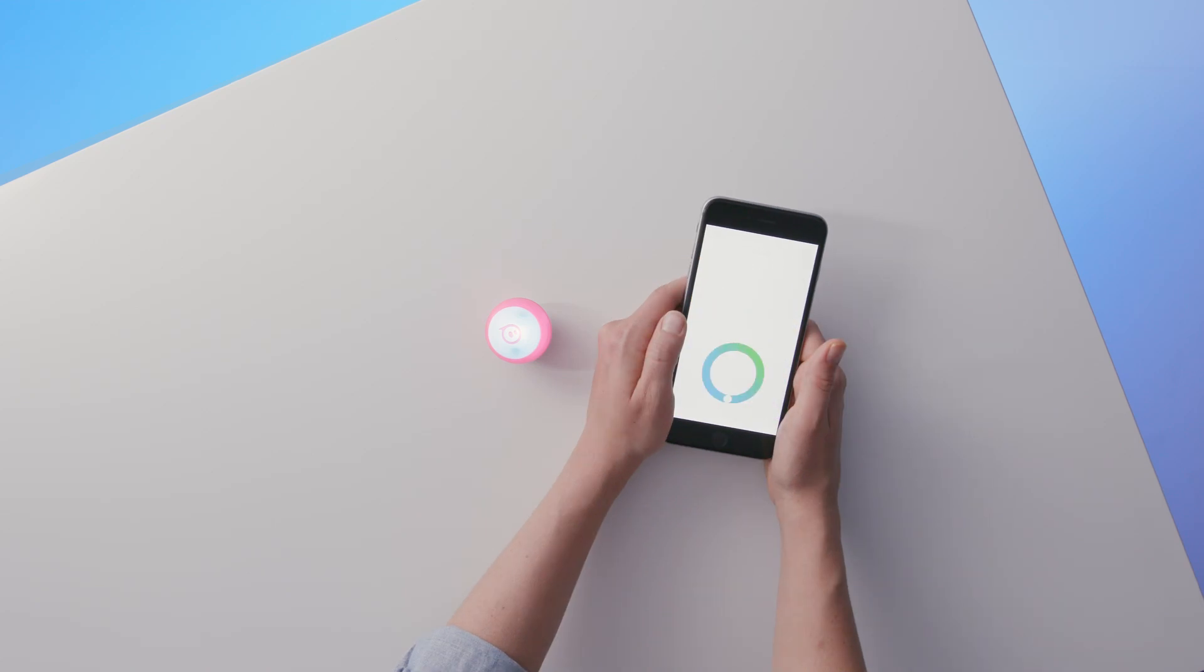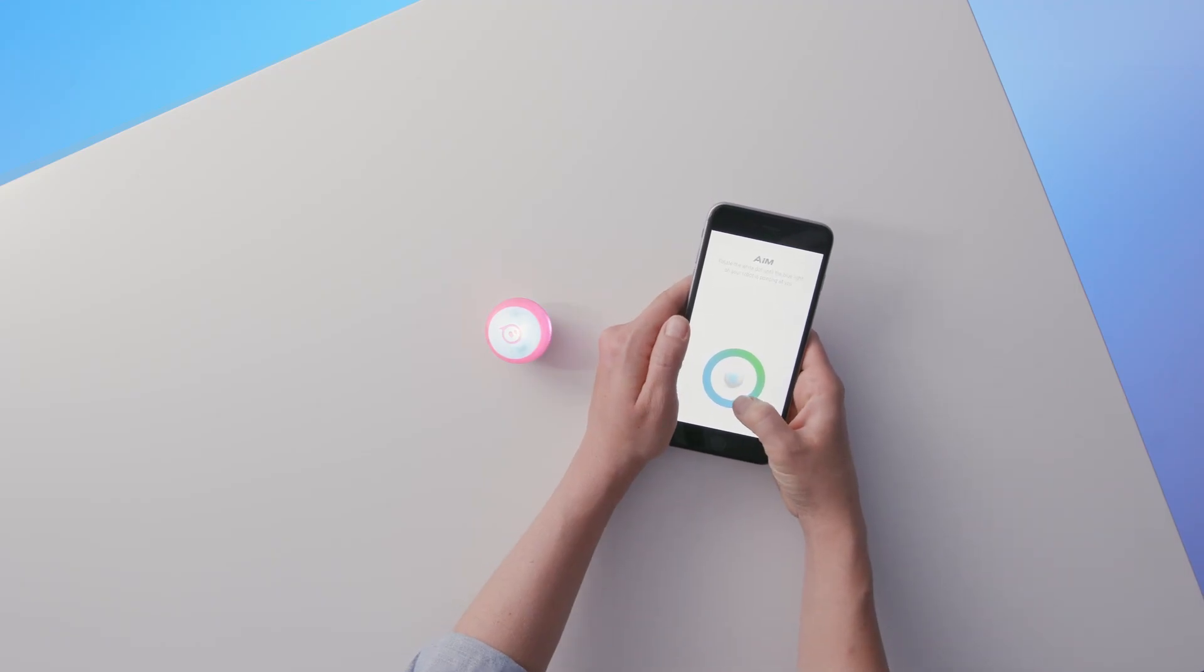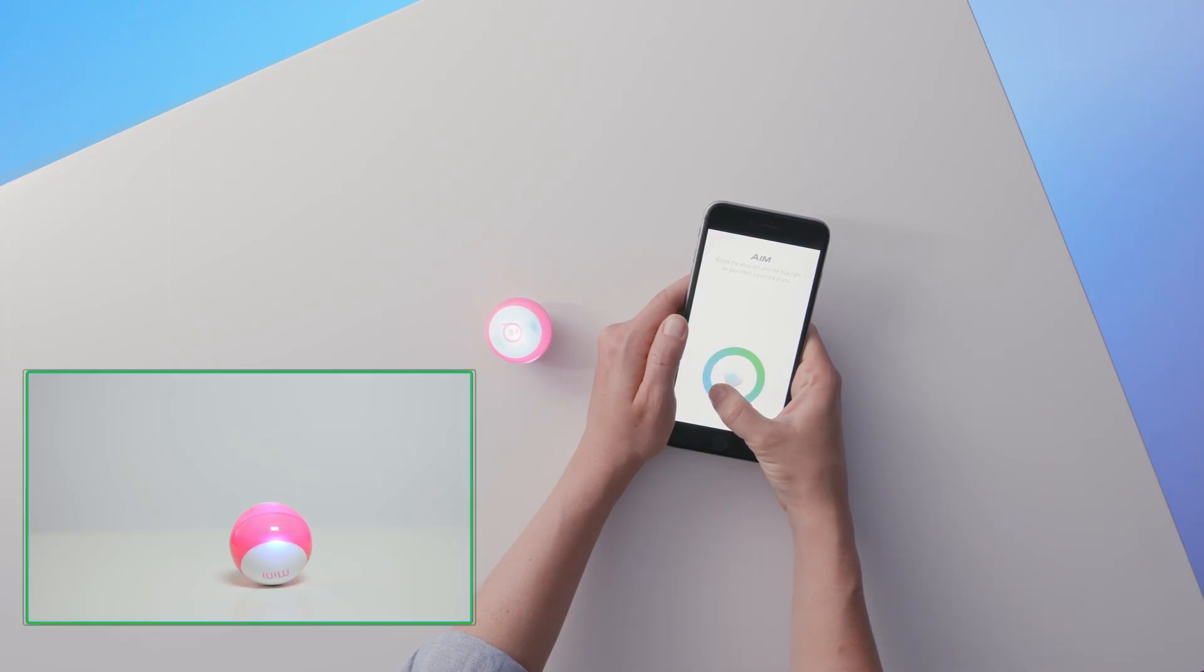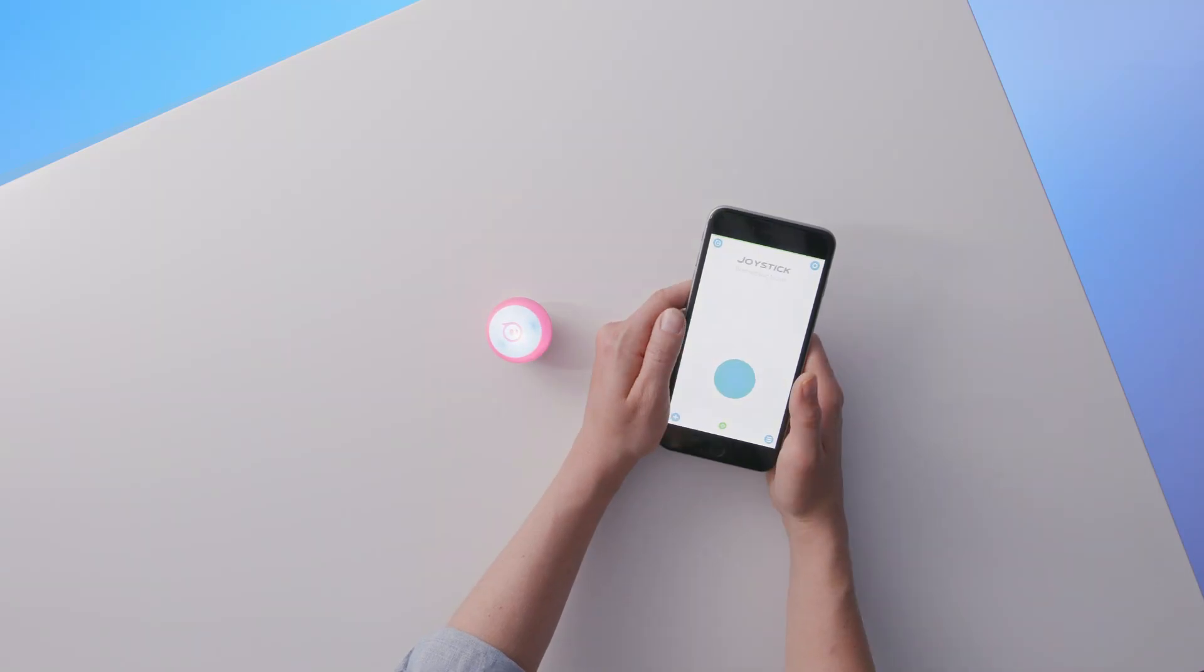Tap and drag the dot until the blue light on the mini is facing toward you. Aiming tells your bot what direction straight is, so that it knows which way to go when you push up on the joystick. You can bring this up anytime to recalibrate if your aim starts to drift by tapping the little reticle in the bottom center of the drive screen.